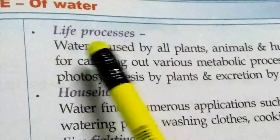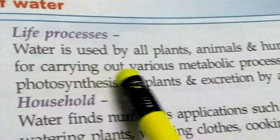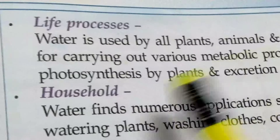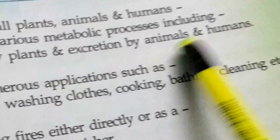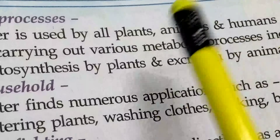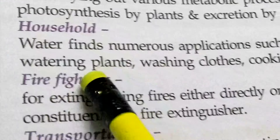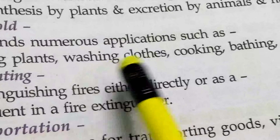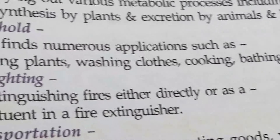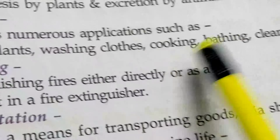Next, importance of water. Basic uses — life processes: water is used by all plants, animals, and humans for carrying out various metabolic activities, including photosynthesis by plants and excretion by animals and humans. Household purposes: water finds numerous applications such as watering plants, washing, cooking, bathing, cleaning, etc.